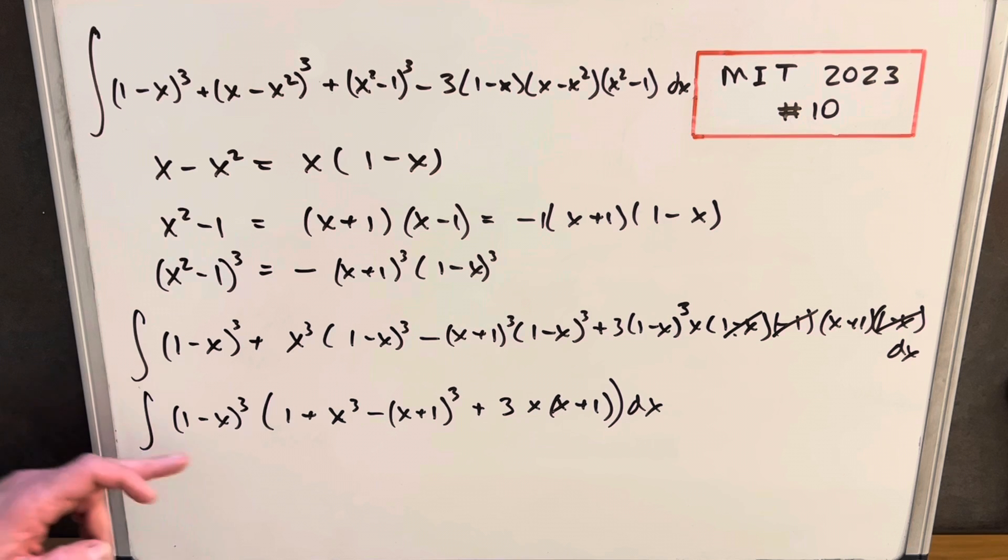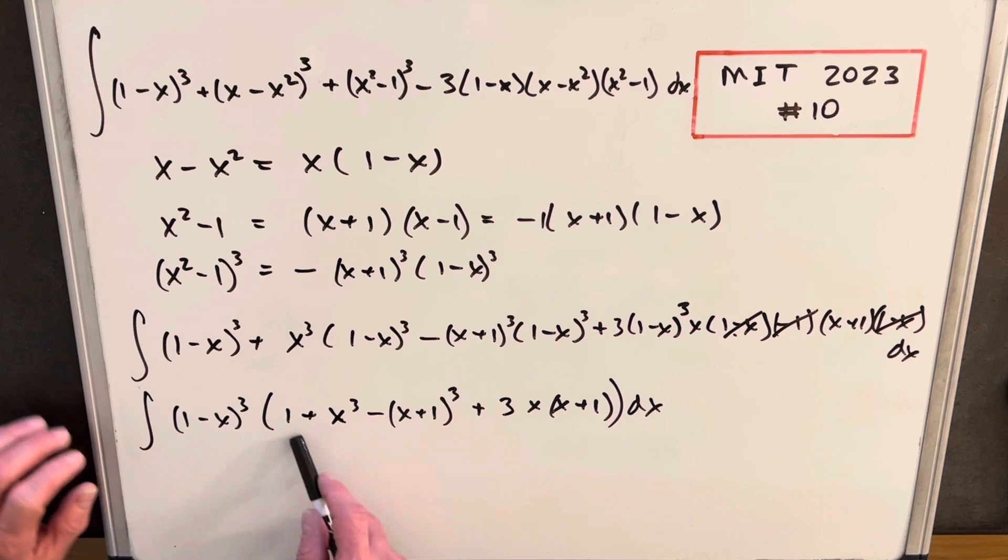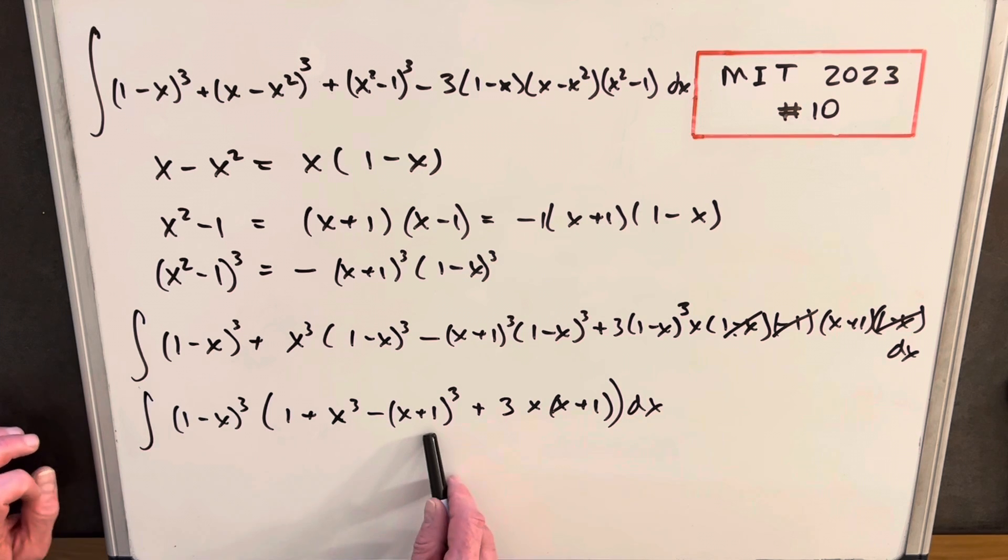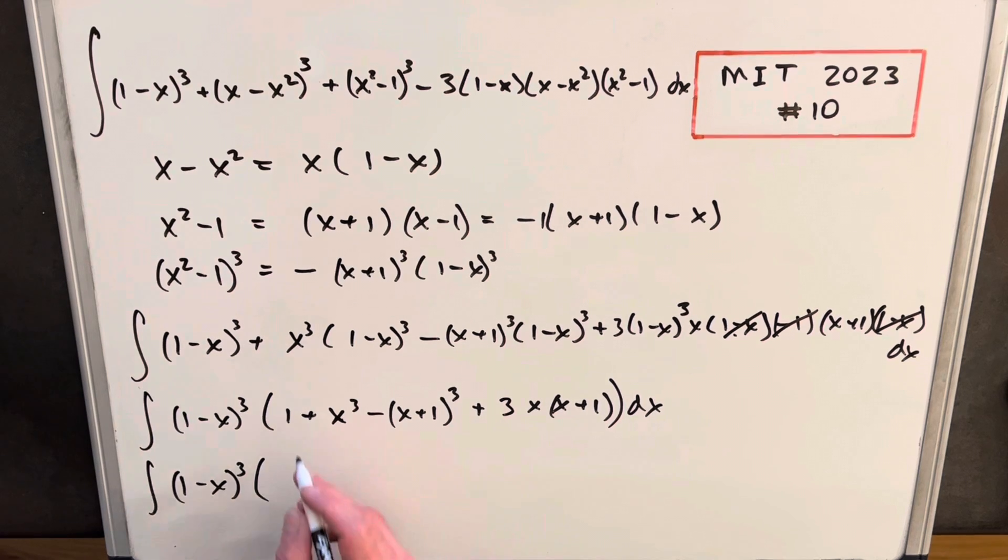Okay, and now I think we're making some good progress. We factored out our 1 minus x cubed. And then for my next step, I want to focus on what's inside the parentheses. And what we can do is we can just expand out this x plus 1 cubed. So I'm just going to keep my 1 plus x cubed here.